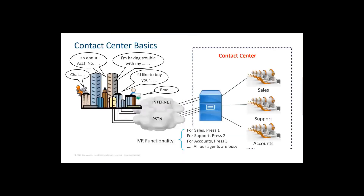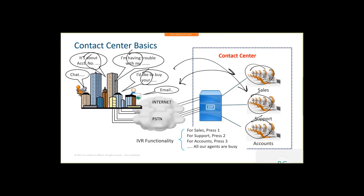With the contact centre basics — at the risk of teaching you how to suck eggs — what is a contact centre? It's a chunk of technology that allows callers with specific requirements, maybe accounts, maybe support, maybe sales, to be connected to a particular group of agents determined to be best able to handle that call. That group of agents is often referred to as a skill group, or in the brave new world, a precision queue. Regardless of what you call it, it's the job of the contact centre technology to make the association and deliver the caller to the appropriate agent.